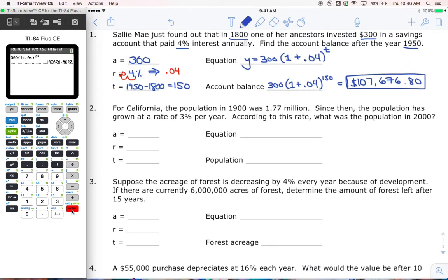For California, the population in 1900 was 1.77 million - that's my initial amount, 1.77 million. Since then, the population has grown at a rate of 3% per year, so 3%, which we know is going to be 0.03. According to this rate, what was the population in 2000? So in 2000, how many years is that from 1900? That's 100 years later.